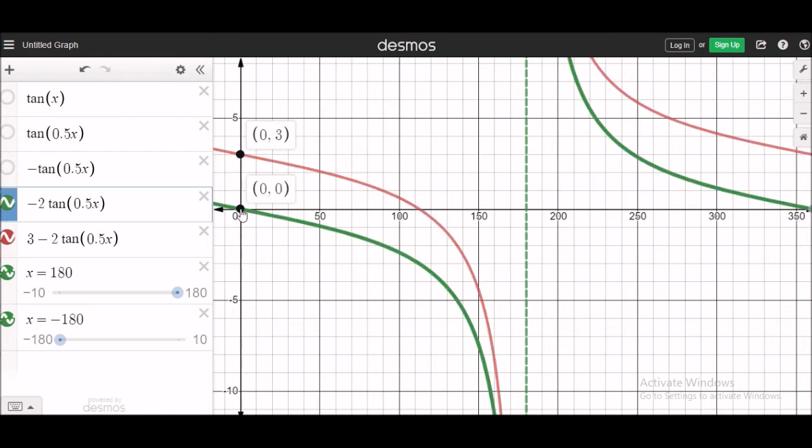And from 0, it is being lifted 3 units up. And you know the y intercept is 3 here.